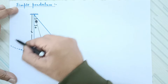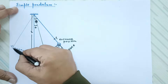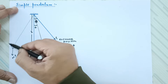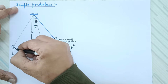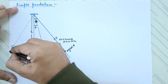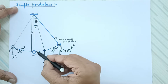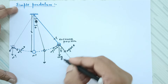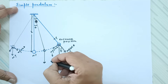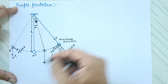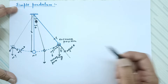We can draw mg on the other side as well. Again splitting it into two parts: one is mg cos theta and the other is mg sin theta. Once again, mg sin theta is the force responsible for bringing the pendulum back to its mean position, serving as the restoring force.